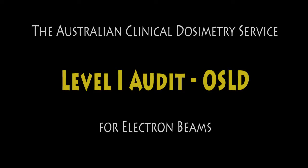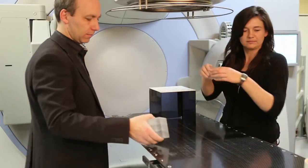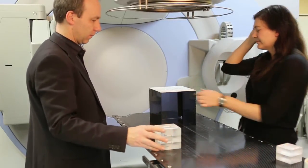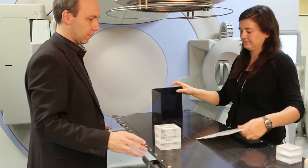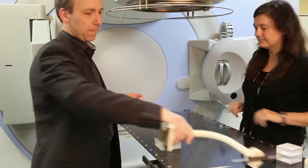Welcome to the ACDS Level 1 OSLD audit for electron beams. Once the photons have been completed, take down the platform and stand. They are not used for the electron irradiations.